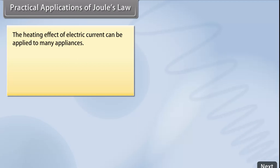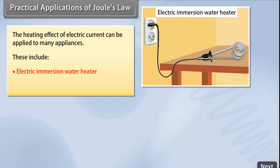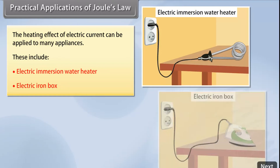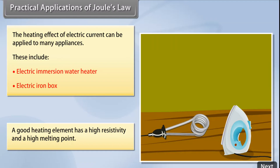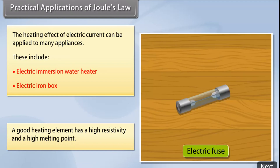This is defined as H = I²RT and is known as Joule's Law. The heating effect of electric current can be applied to many appliances, including an electric immersion water heater and an electric iron. A good heating element has high resistivity and a high melting point. For example, an electric fuse is an example of the heating effect of electric current. The rating of 3A on an electric fuse states that the maximum current it can sustain is 3A.